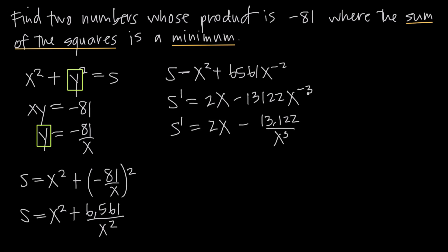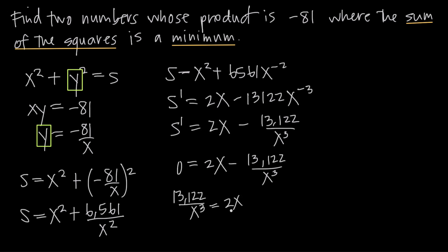Once we have the derivative, we set it equal to zero to find the critical points. Setting s prime equal to zero: 0 equals 2x minus 13122 over x cubed. Adding 13122 over x cubed to both sides and multiplying both sides by x cubed, then dividing by 2, we get 6561 equals x to the 4th. Taking the 4th root of both sides, x equals 9, because 9 to the 4th equals 6561.